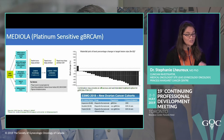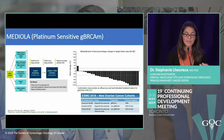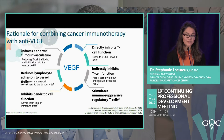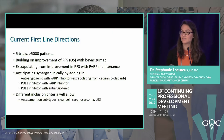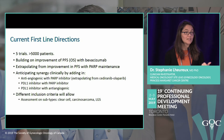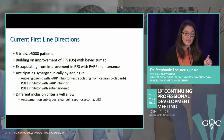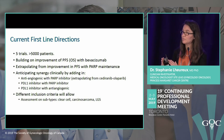Trials are also assessing olaparib with durvalumab, or even a triplet of olaparib, durvalumab, and bevacizumab. These combinations appear safe with early activity signals. First-line trials are now combining all three approaches — anti-angiogenic, PARP inhibitor, and PD-L1 inhibitor — to see if combining synergistic mechanisms can improve outcomes and overcome treatment resistance.